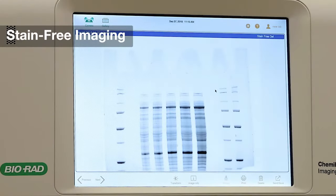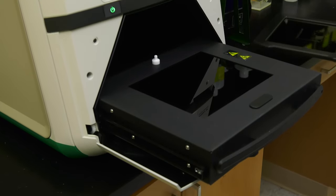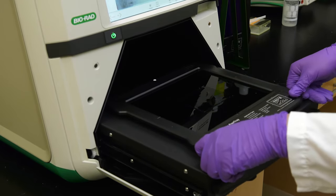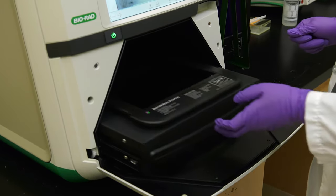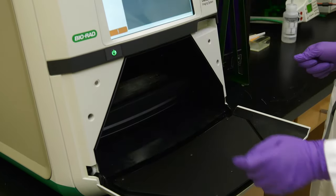Bio-Rad's stain-free gels are an excellent alternative to Kumasi Blue. No staining or de-staining is required, just a simple 45-second UV activation step. After you've completed electrophoresis, place the stain-free gel directly on the UV tray. When you are satisfied with the position, push the transilluminator back in and close the drawer.